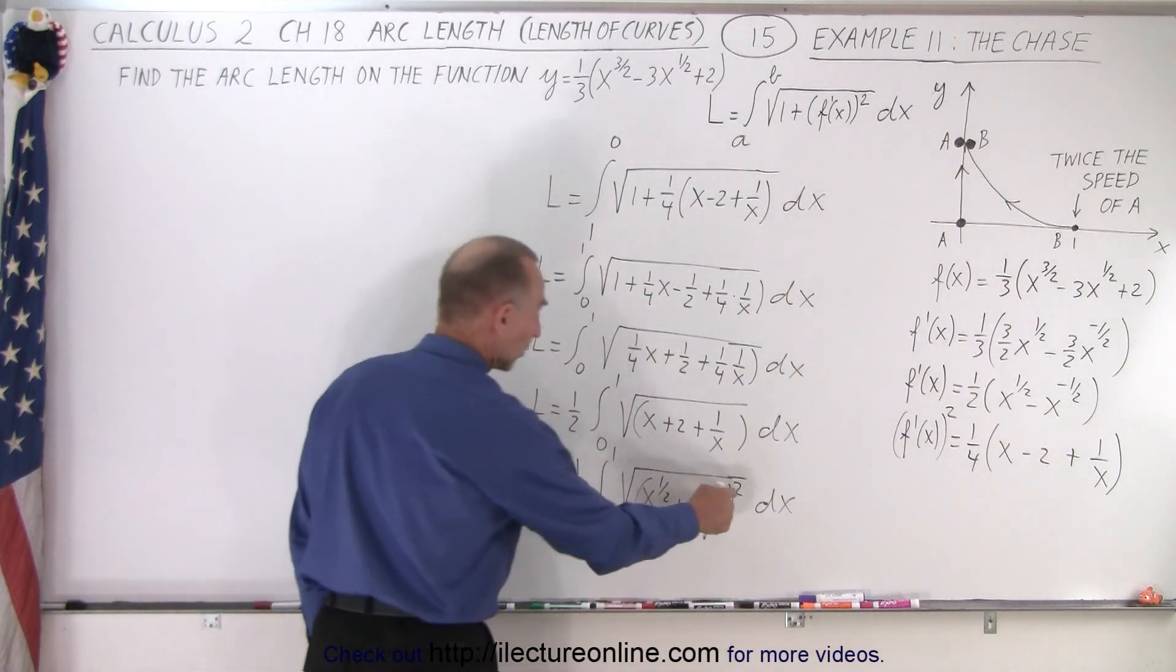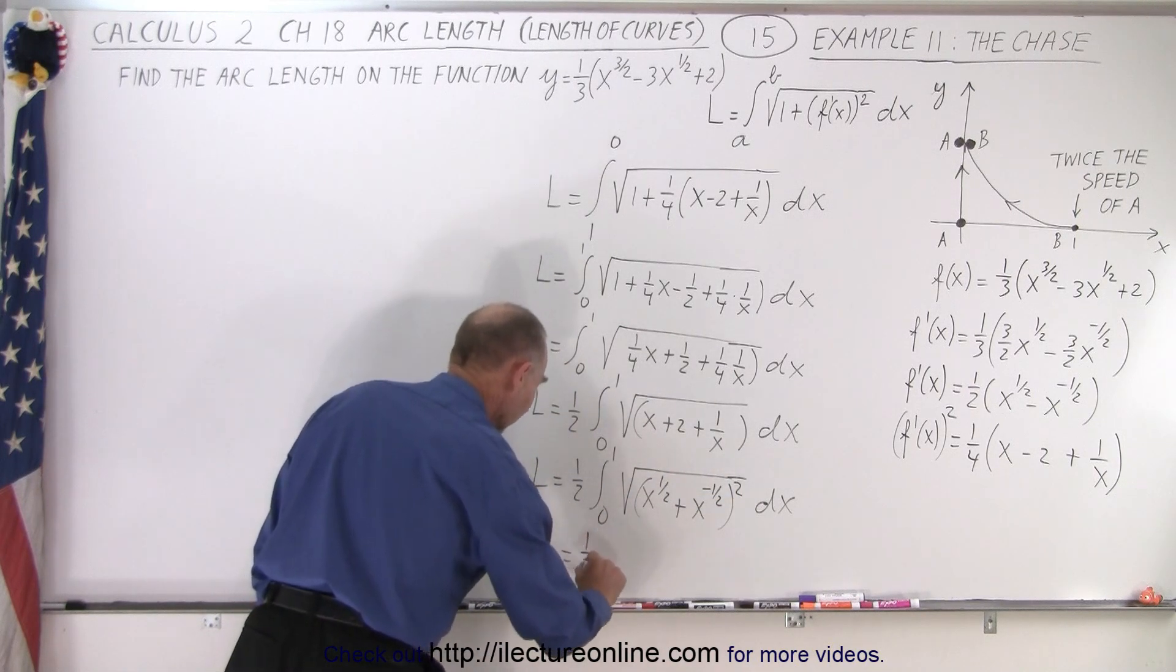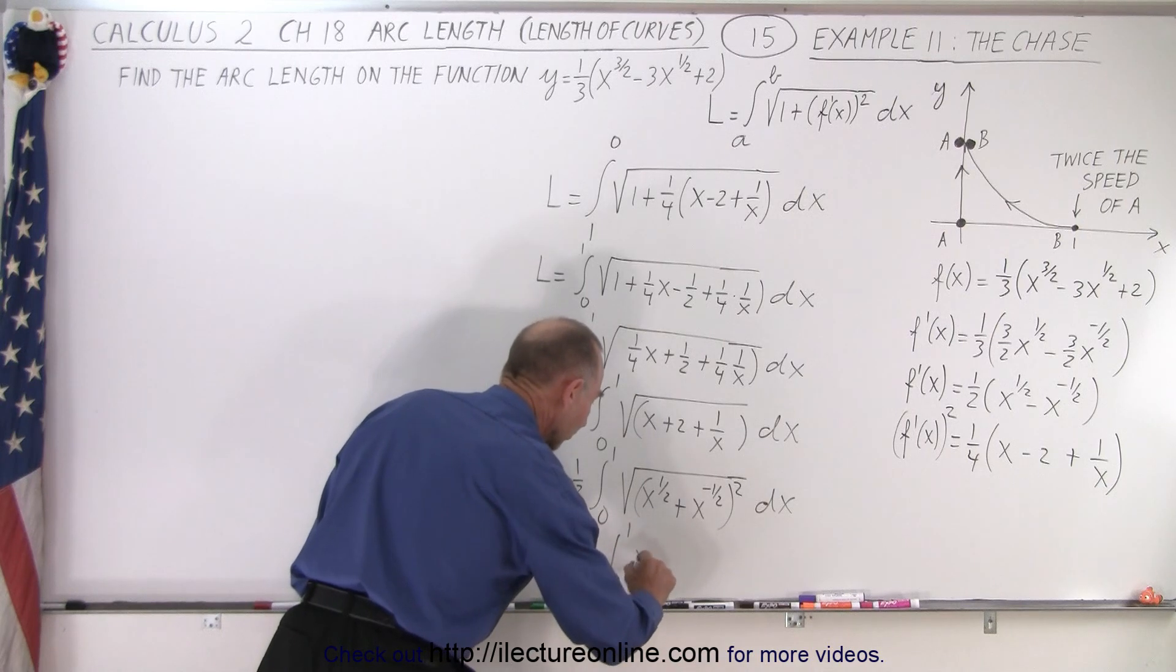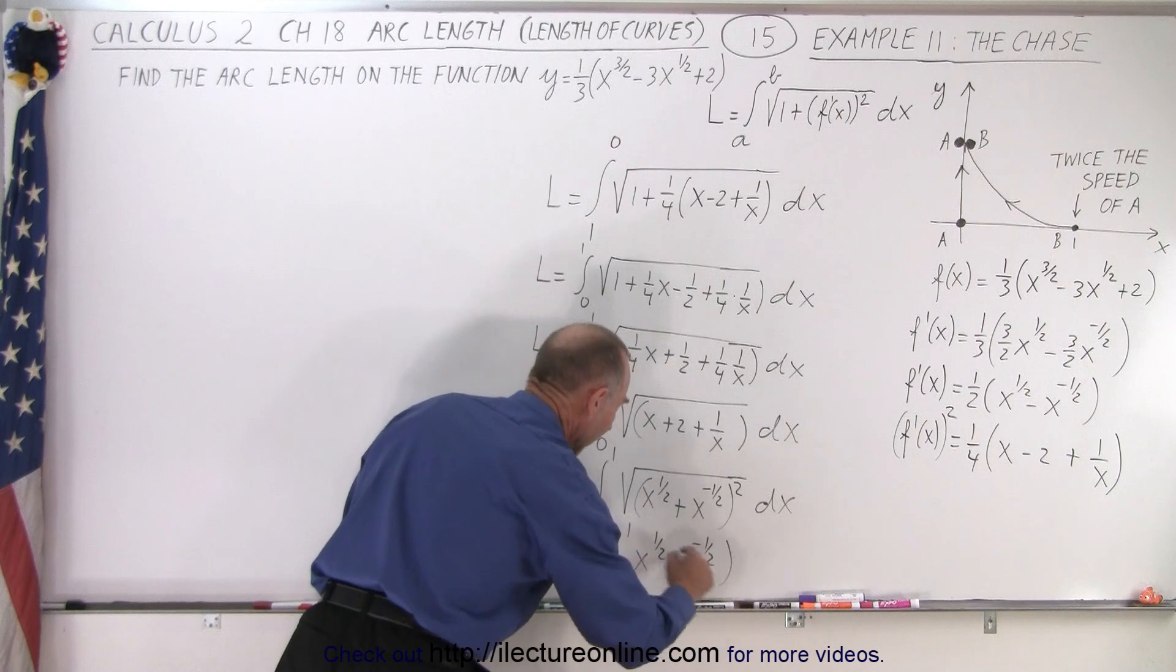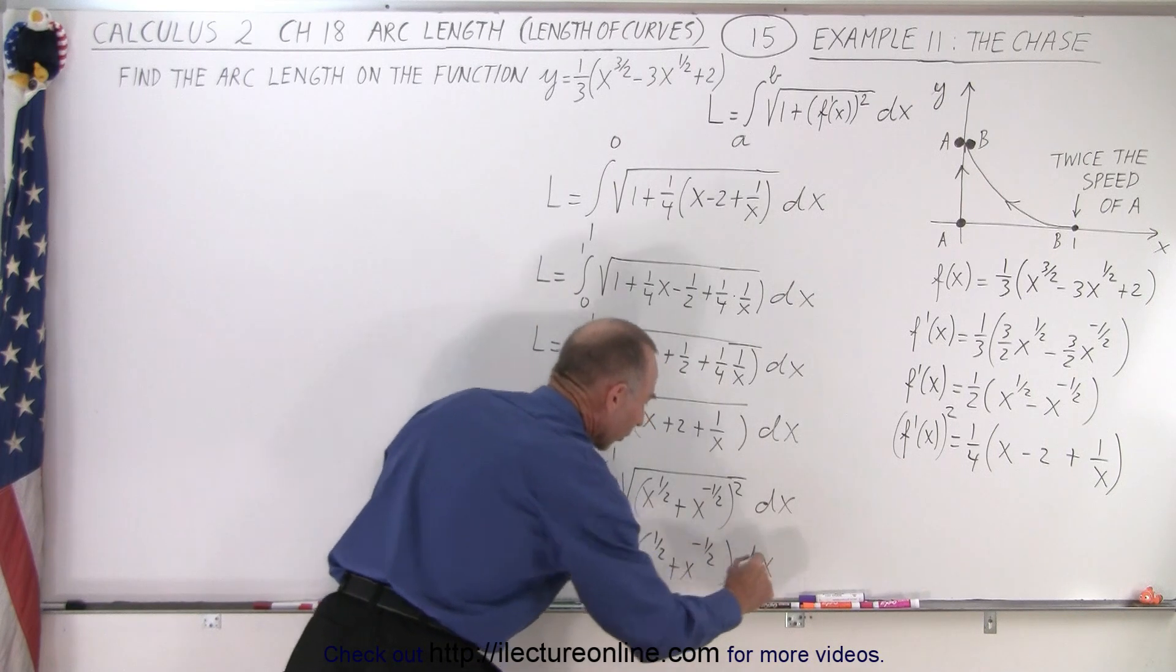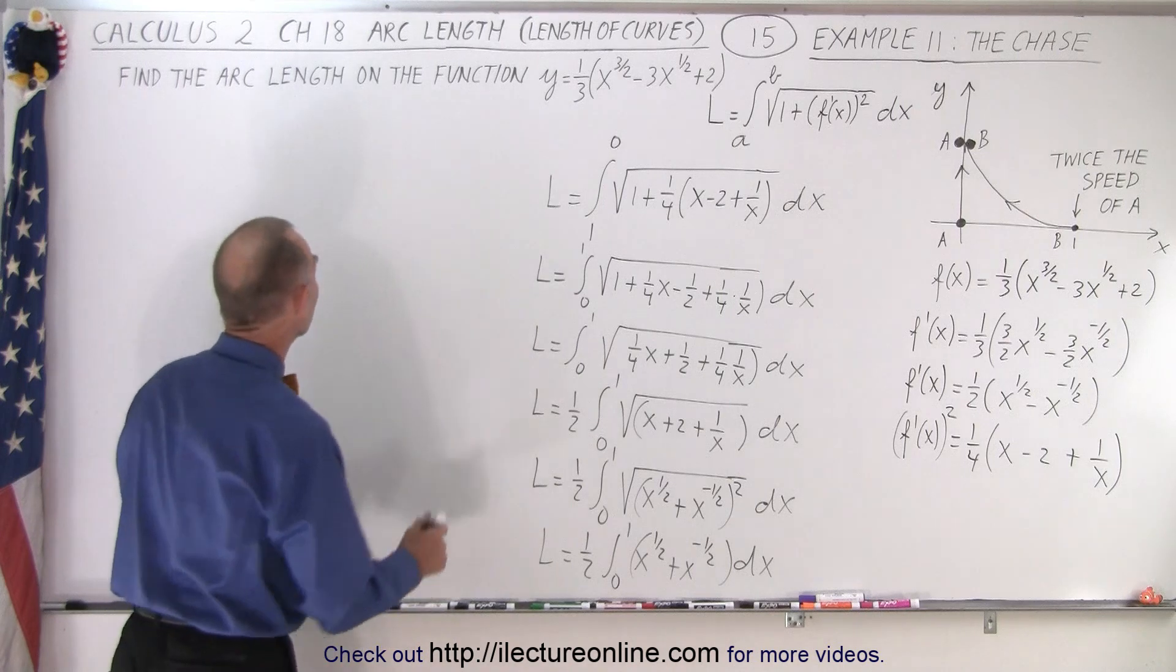And, of course, the square will negate the square root. We end up with L is equal to one-half times the integral from zero to one of x to the one-half plus x to the minus one-half times dx. And that, of course, is a reasonably easy integral to integrate. So let's come up here.